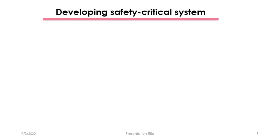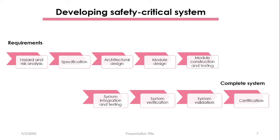Next is Developing Safety Critical Systems. The requirements process includes: hazard and risk analysis, specification, architectural design, module design, module construction and testing, system integration and testing, system verification, validation, and the most complete step is certification. The first step is hazard and risk analysis. In this step, data or information about a system or product is gathered and analyzed — whether it is safe, whether its benefits are good, and whether it will not harm people or the environment.